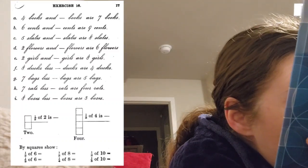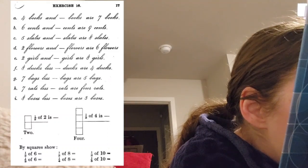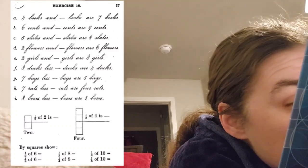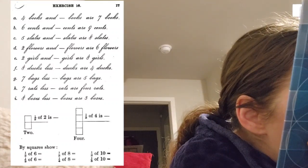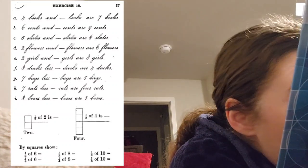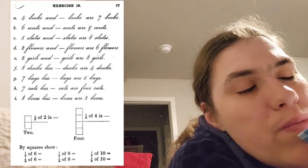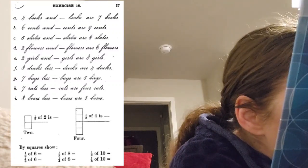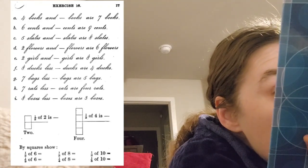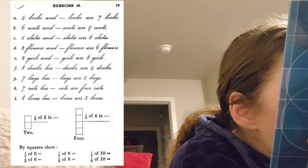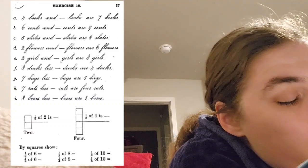Seven boys and, oh they're bags? Or boys? I don't know if these are boys or bags. I'm gonna say they're bags. Seven bags less blank bags are five bags. Seven bags less two bags are five bags. Seven rats less blank rats are four rats. Seven rats less three rats are four rats.